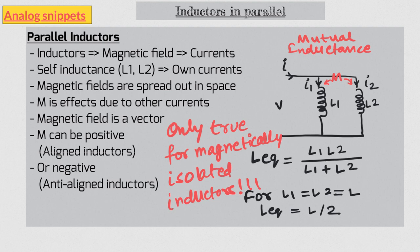When we account for M, the equation is modified. In fact, there are actually two equations here because of the minus-plus sign in the denominator. The minus sign is for aligned inductors and the plus sign is for anti-aligned inductors. What I'm going to do in this video is explore this equation further, and towards the end I'm going to give a derivation of this equation, just in case you are interested.